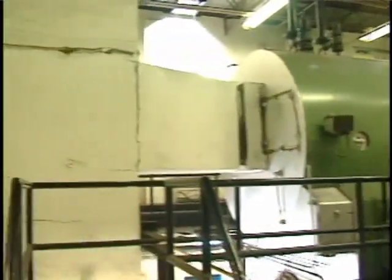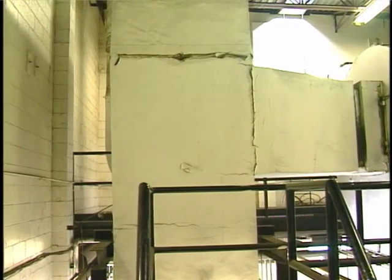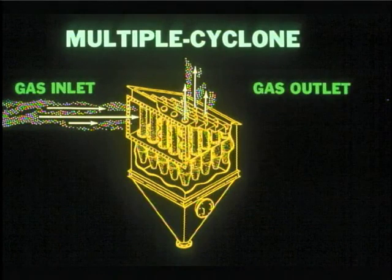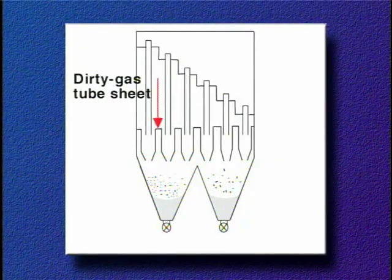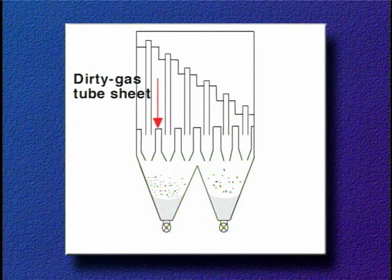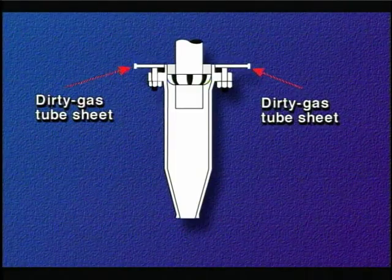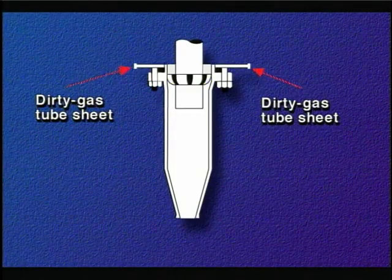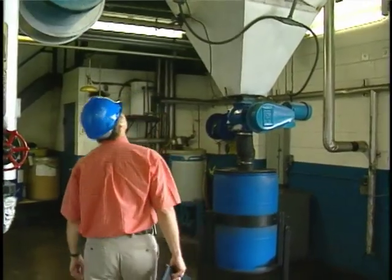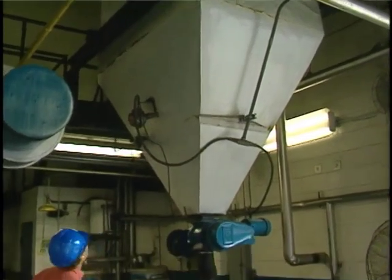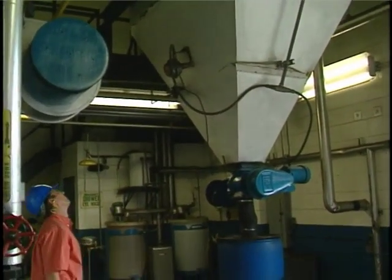Multi-cyclone collectors are divided into three areas by metal plates referred to as tube sheets. The dirty gas stream enters the collector between these two tube sheets. The lower, or dirty gas tube sheet, separates the inlet gas stream from the lower casing and hopper area of the collector. The cyclones are mounted in holes in this tube sheet and extend into the lower casing. Particles exiting the individual cyclones are collected in a common hopper section below the lower casing before being removed for disposal.